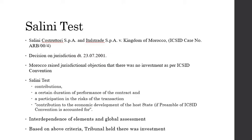Readers may recollect from the previous lecture where we discussed the wider asset-based definition of investment and the narrower enterprise-based definition. The Morocco-Italy BIT of 1990, under which this arbitration was invoked in the Salini matter, contained a wider asset-based definition. We also discussed in the previous lecture that asset-based definitions usually consisted of two parts: the first part defined investment and the second part provided a non-exhaustive list of what constituted investment. The Salini tribunal found that there was an investment as per the BIT, at least under two items of the non-exhaustive list.